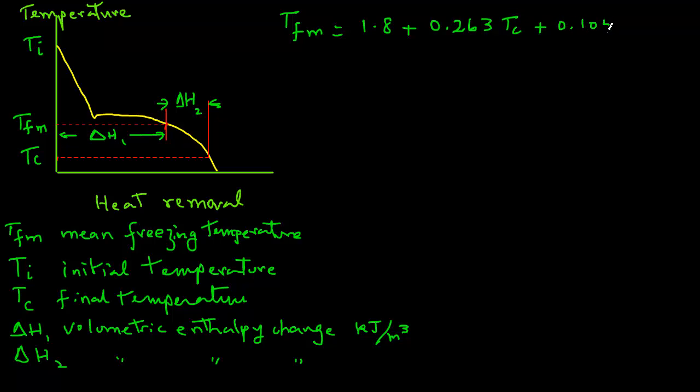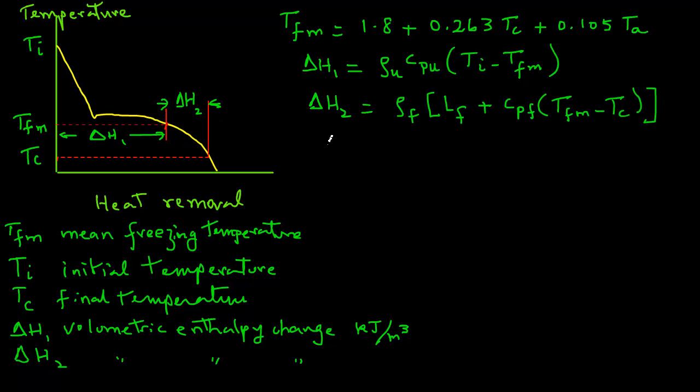For these sections on the graph, delta H1 equals rho u times Cpu times (Ti minus Tfm), and delta H2 equals rho f times [Lf plus Cf times (Tfm minus Tc)].